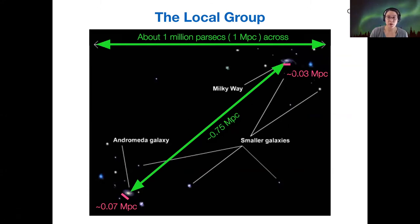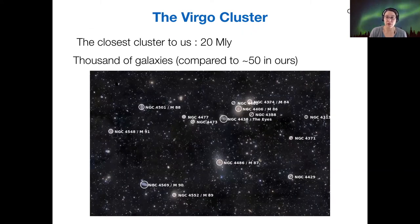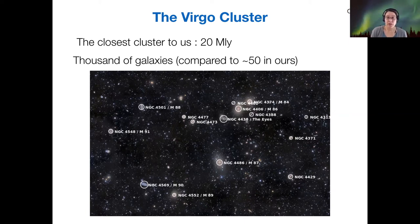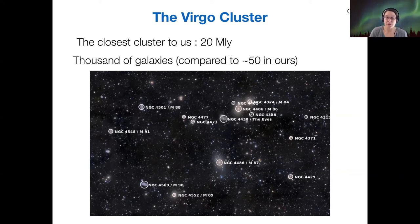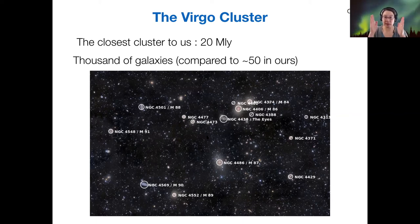This is just our local group, but it's not the only galaxy cluster we know of. The Virgo cluster is the closest cluster neighbor to our local group, and that's 20 million light years away. The Virgo cluster is a very rich cluster — that's the terminology astronomers use, rich cluster versus poor cluster. There are thousands of galaxies in Virgo compared to only about 50 in our local group. Some galaxy clusters are quite busy places, but you can still see the major theme: the distances between galaxies, especially the major ones, are much greater than the sizes of the galaxies themselves.